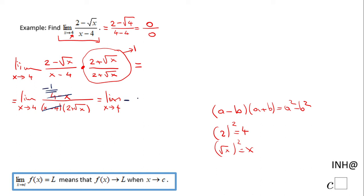So we have -1/(2 + √x). And now we can plug in 4, and we have -1/(2 + √4). That will be negative—√4 is 2, plus 2 is 4. So -1/4.